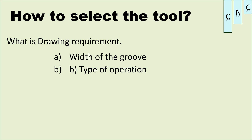Grooving is a very slow process. If you want to use turning or facing with some limitations, and if you run at fast speed, you can break the insert — there are many chances of that. The types of operations are: OD grooving, face grooving, and ID grooving. Then you select the appropriate tool holder.